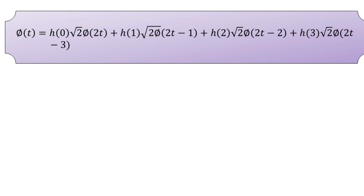The support — the length over which the scaling function is defined — was discussed in the previous video. We then use this refinement relation to build the scaling function in an iterative fashion. On the right-hand side of the refinement relation, we have the coefficients along with the translated versions of Φ(2T).